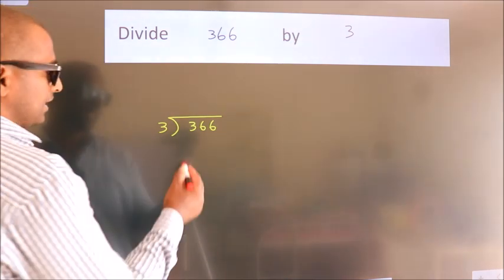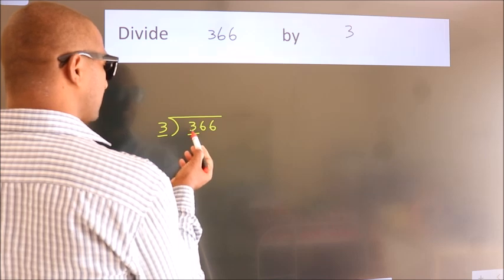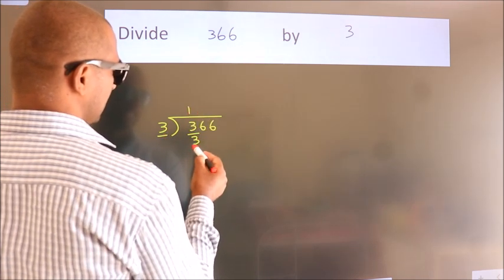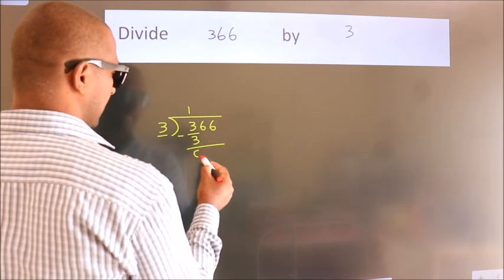Next, here we have 3. Here 3. When do we get 3? In the 3 table. 3 once is 3. Now we should subtract. We get 0.